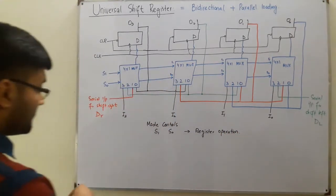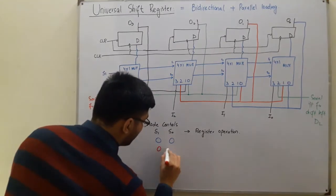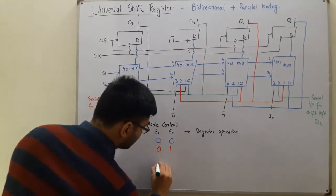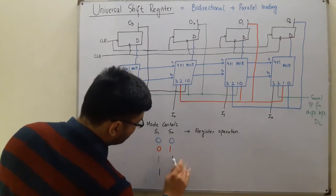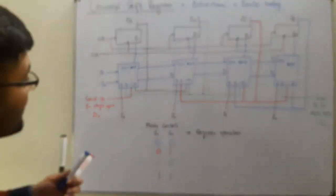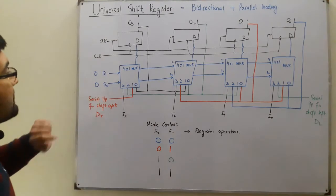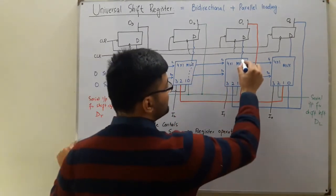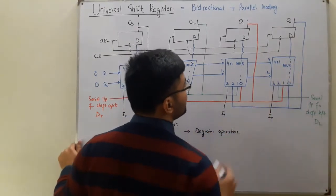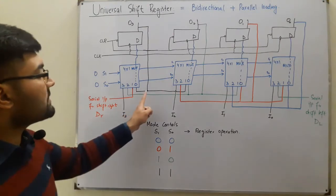The mode control combinations are: S1=0, S0=0; S1=0, S0=1; S1=1, S0=0; and S1=1, S0=1. When S1=0 and S0=0, input 0 of each multiplexer is selected and directed to the output. This feeds the flip-flop output back into its own input.